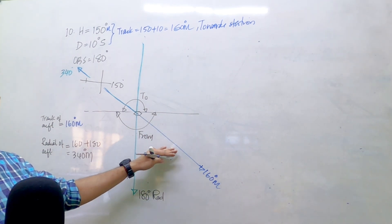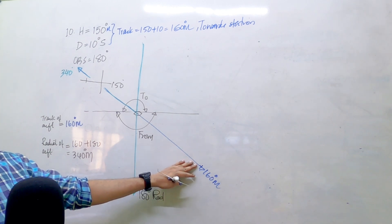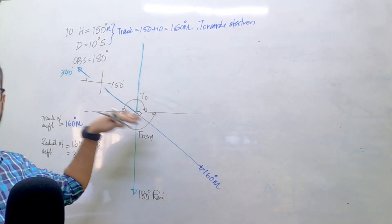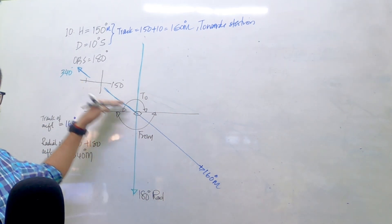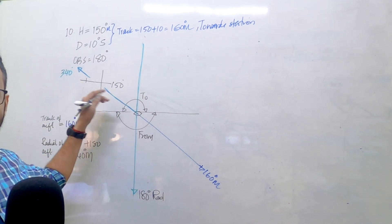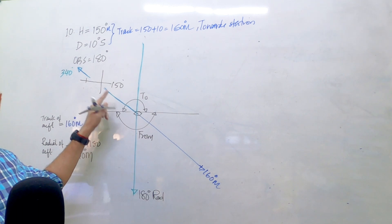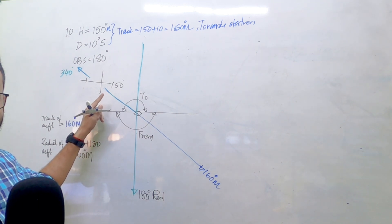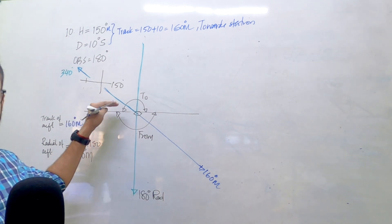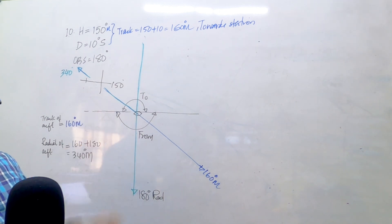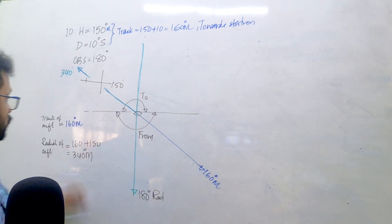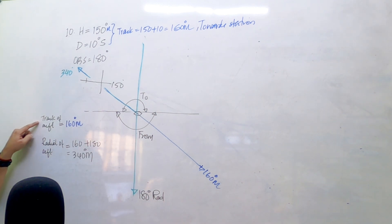When you are moving away from the station, your track and your radial are the same, because the radial is your track from the station - your QDR. When you move towards the station, your radial is exactly opposite to your track, because your track becomes your QDM but your radial is still the QDR.